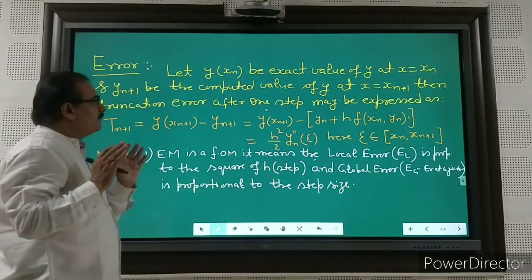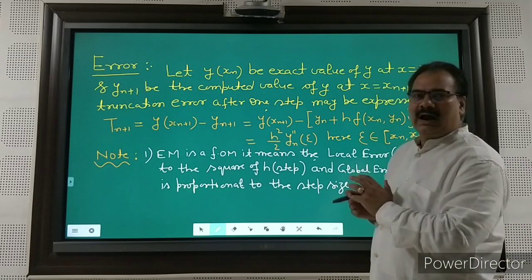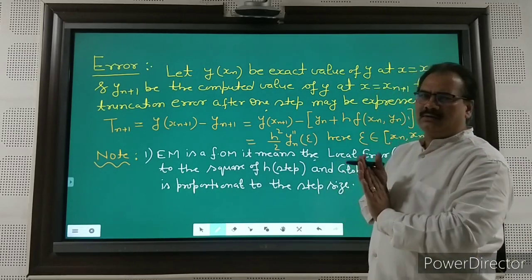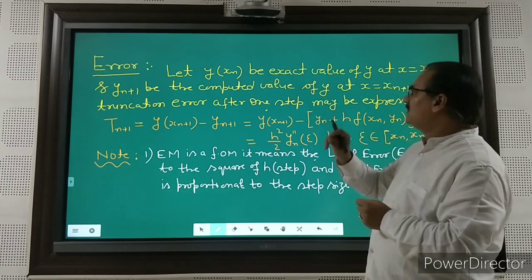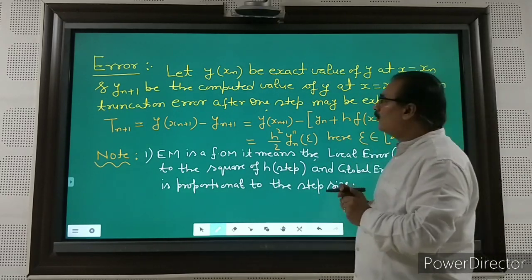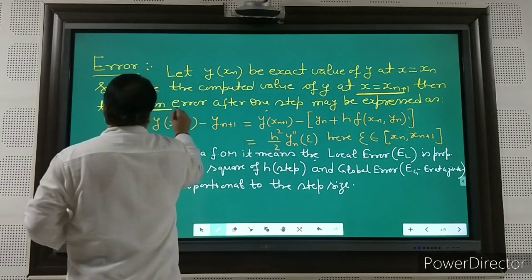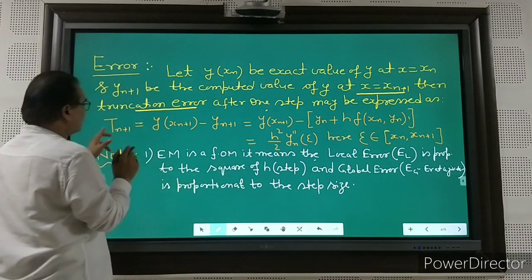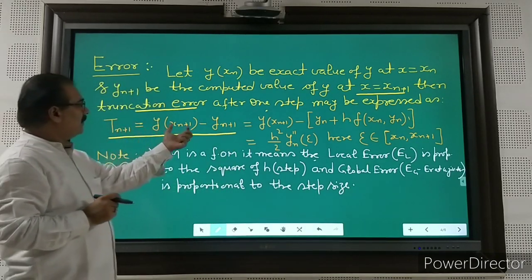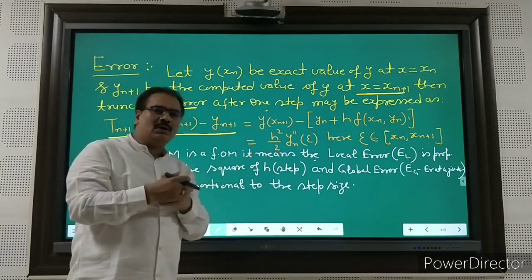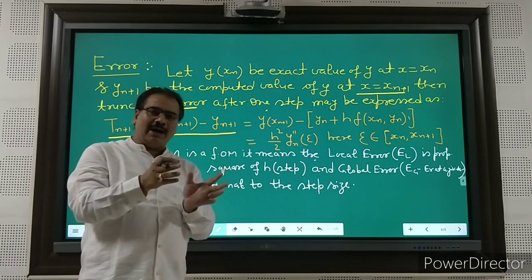Now, the error component is very important. Let y(x_n) be the exact value of y at x = x_n, and y_{n+1} be the computed value at x = x_{n+1}. The truncation error after one step is expressed as T_{n+1} = y(x_{n+1}) − y_{n+1}. The basic definition of error is the difference between the true value and the approximate value.